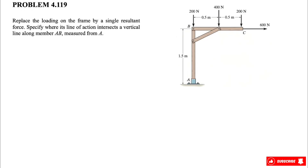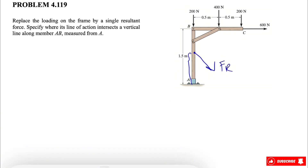Welcome back. We have another question from chapter four. We need to replace the loading on the frame with a resultant force and specify where its line of action intersects a vertical line along member AB, and specify the distance from point A. Basically we have to figure out one single force applying somewhere — let's call it FR — and find the distance d from point A.